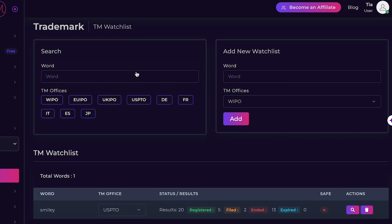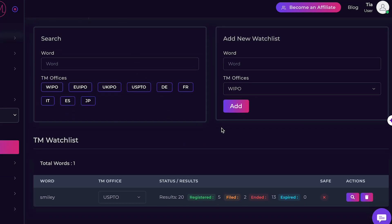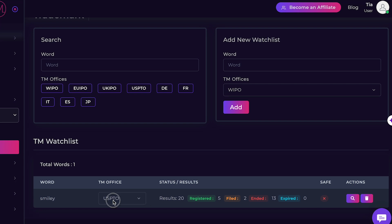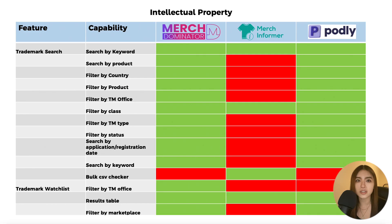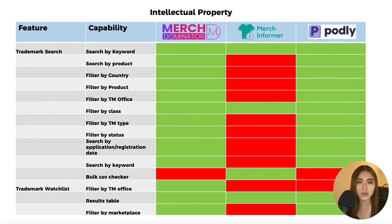The trademark watch list lets you put certain keywords on watch and shows results in terms of live, filed, and rejected trademarks. It tracks these metrics and shows safety over time, so you're aware if there's a major change that may mean you need to remove or amend some of your designs. Merch Informer has an additional capability letting you upload a bulk CSV to check multiple listings, which the other two don't have, but overall Merch Dominator wins here.